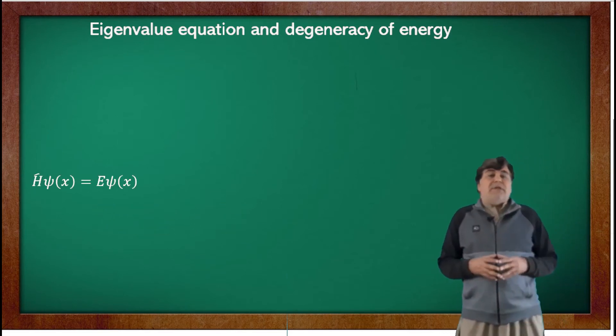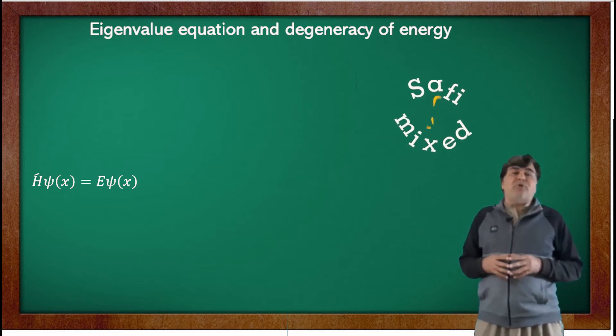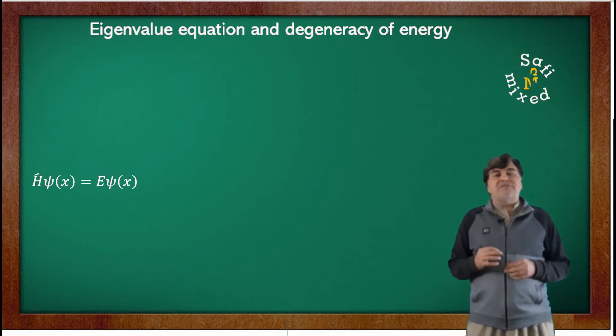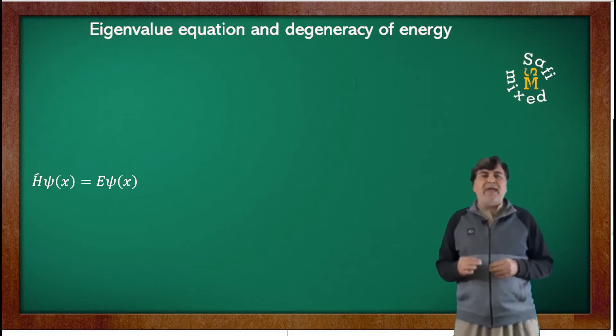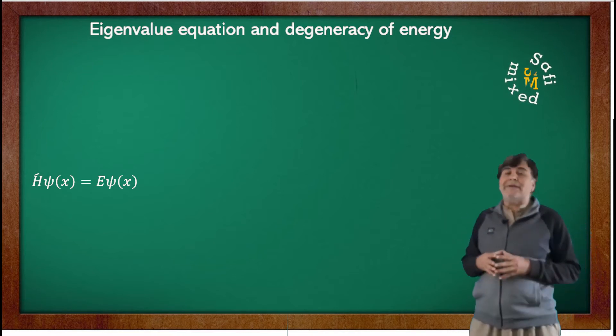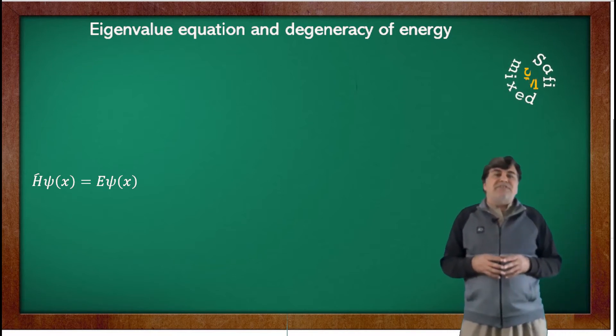This equation has special properties. The operator Ĥ acting on the wave function ψ(x) gives back the wave function multiplied with a constant, which I am writing in this case equal to E. Such an equation is called an eigenvalue equation.